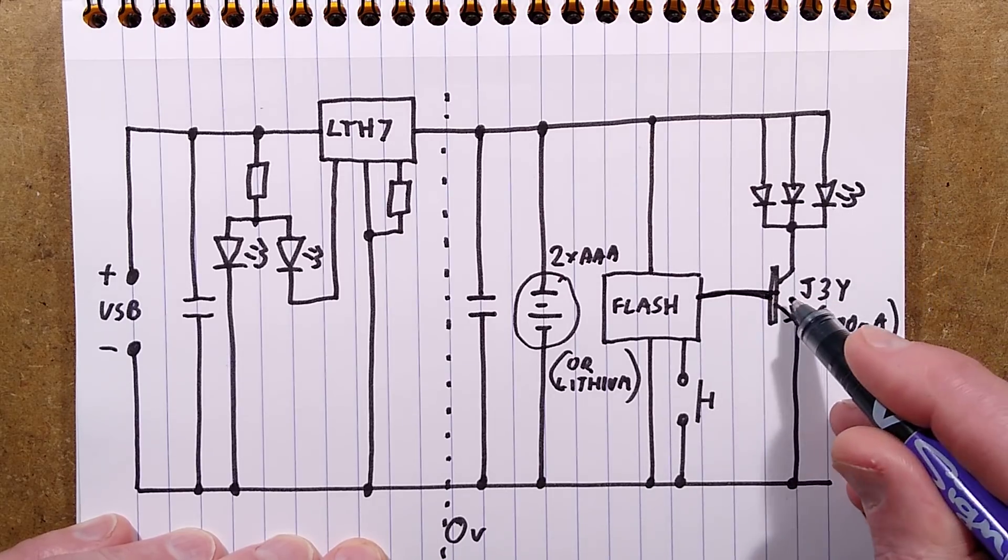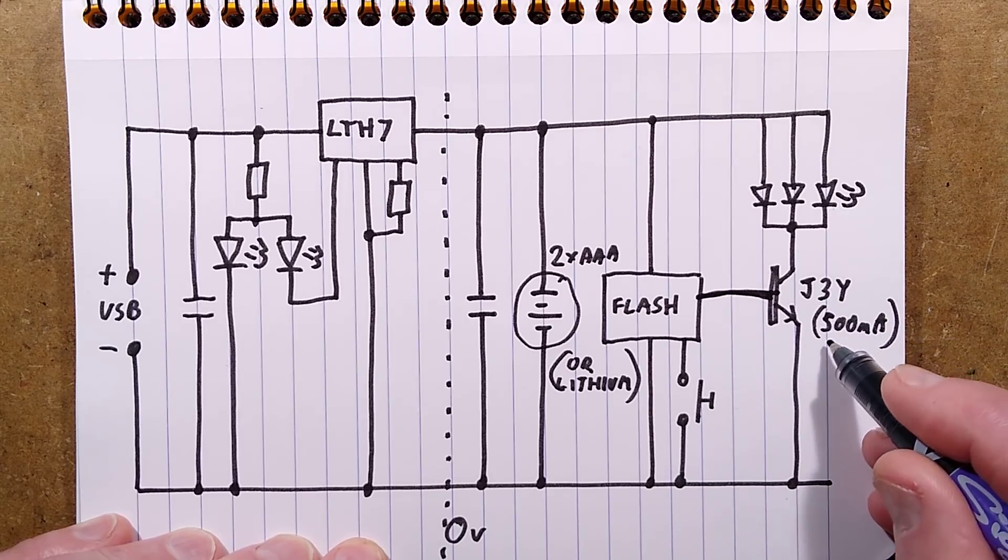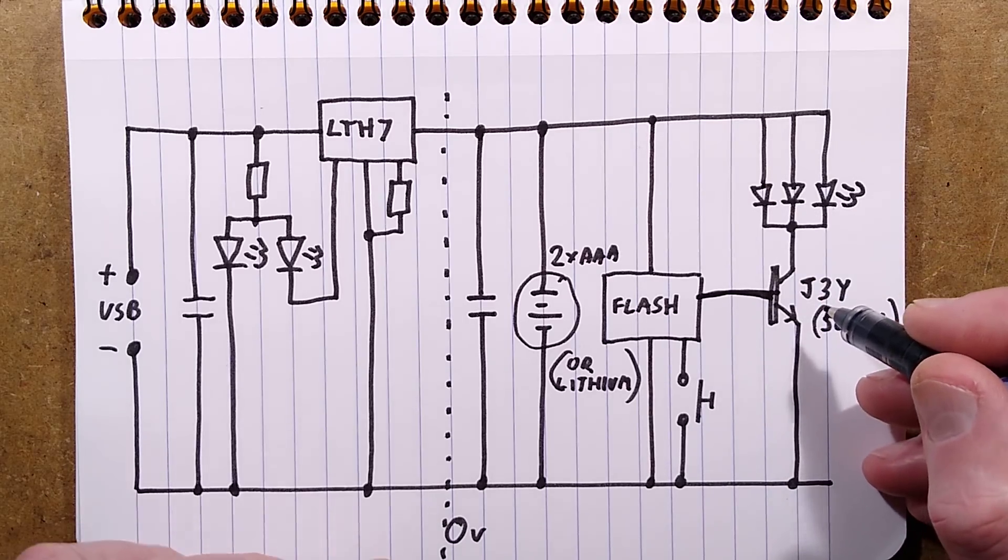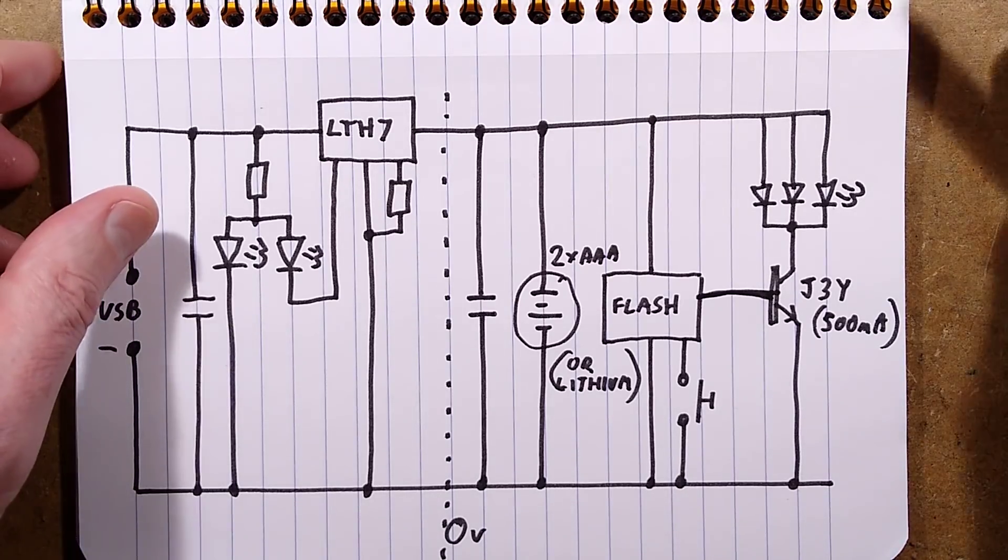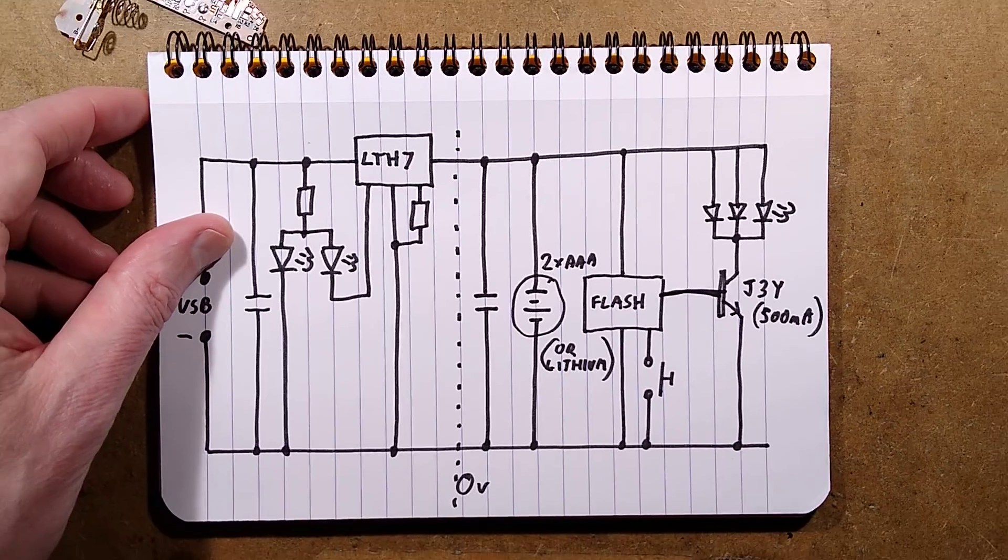It has the button pulling that input pin down to the zero volt rail to actually toggle through the modes, and then it's straight out to an NPN transistor, J3Y, rated 500 milliamp, that then lights the LEDs. That is it. It's very straightforward. And it is designed to be multiple use type scenarios.